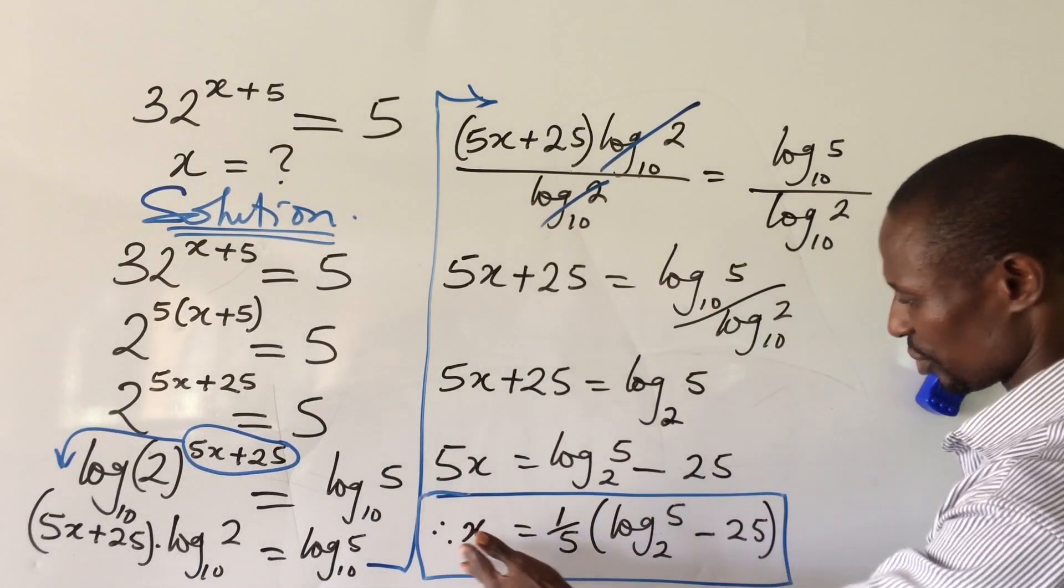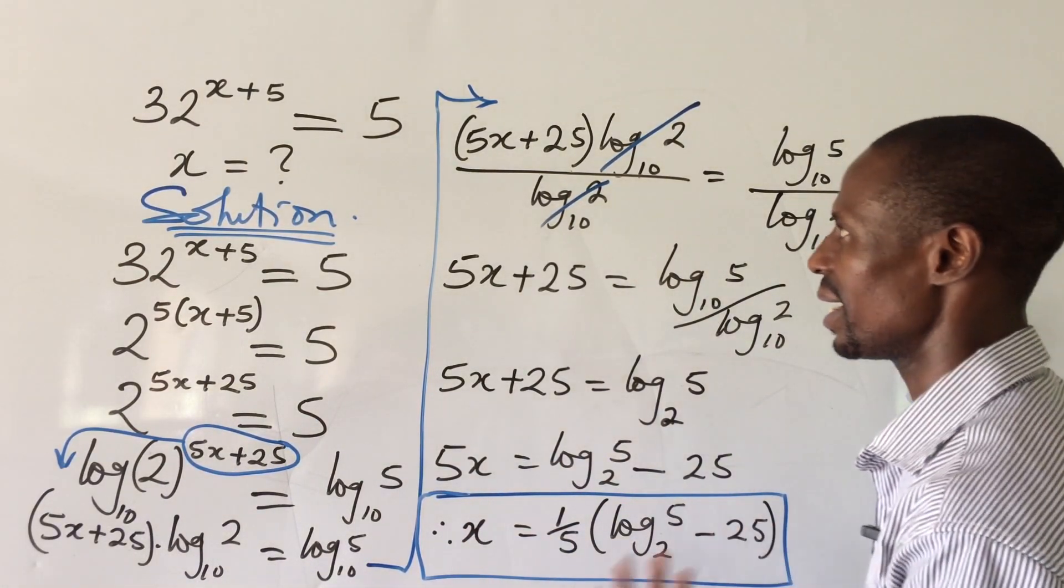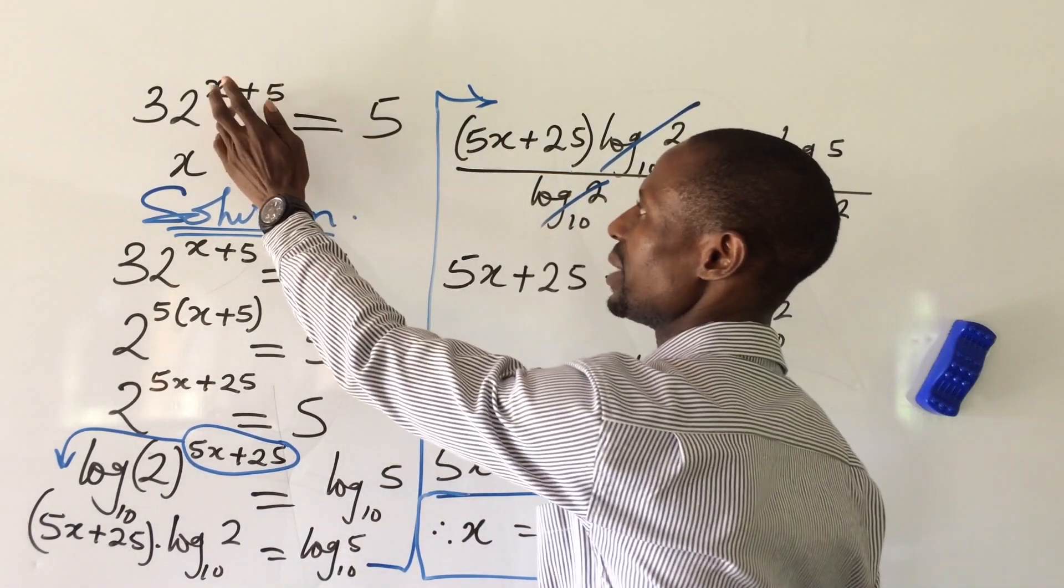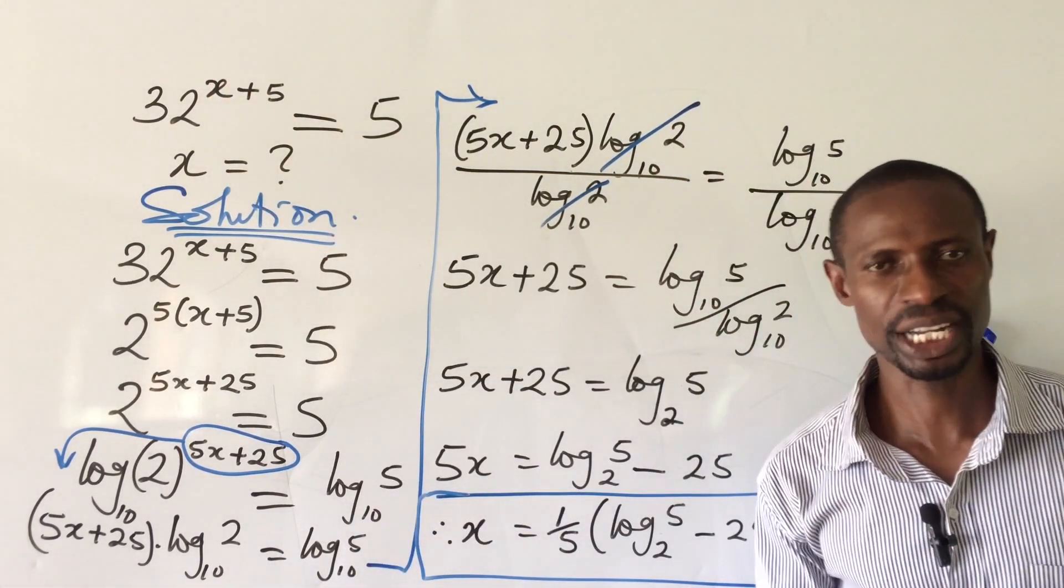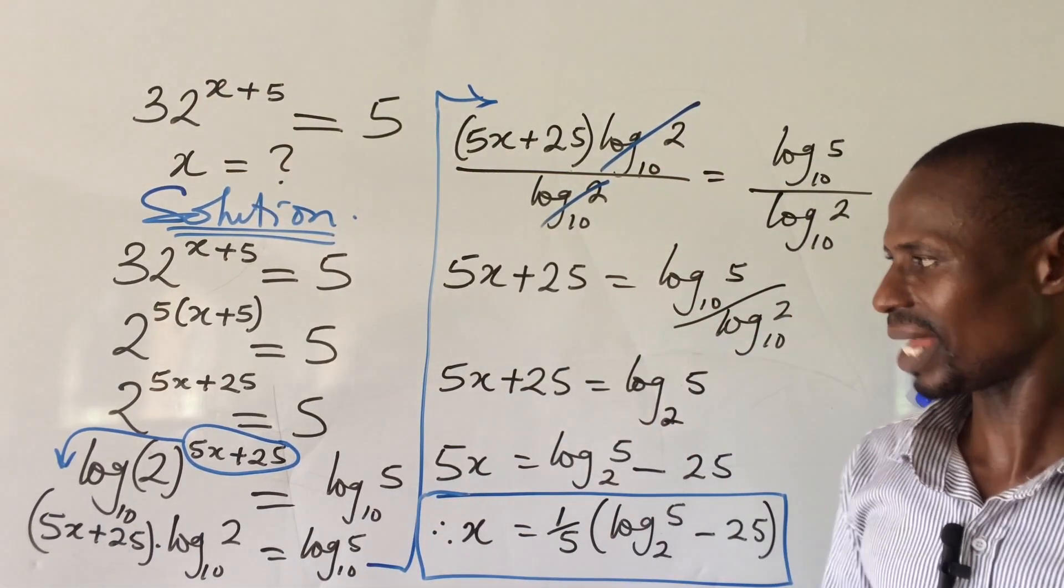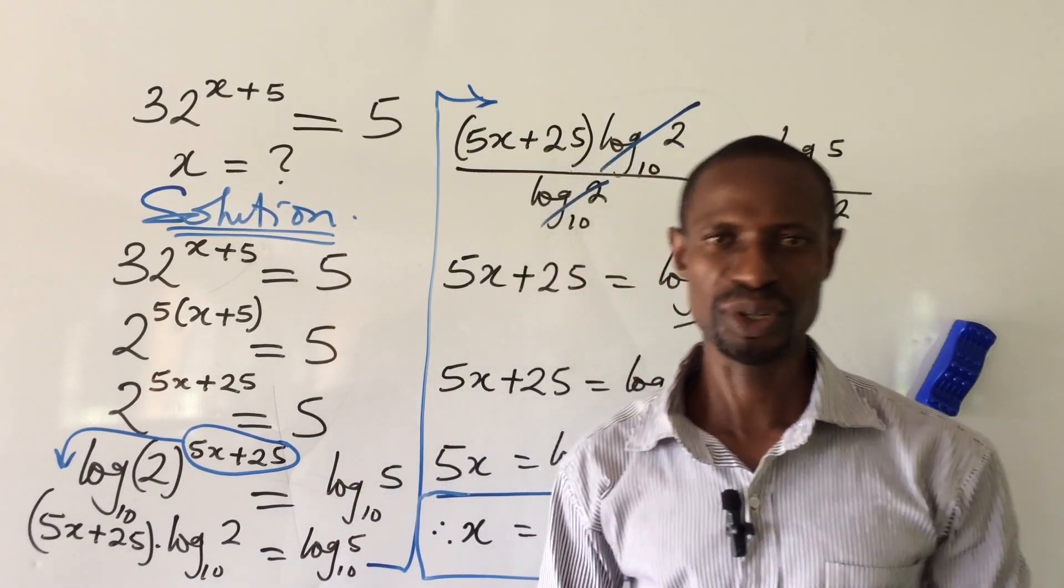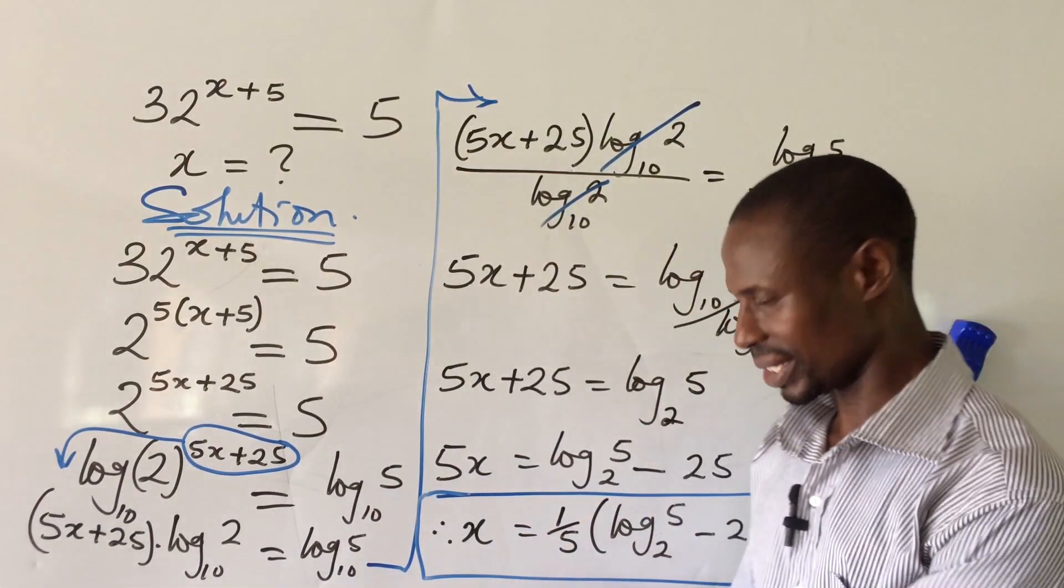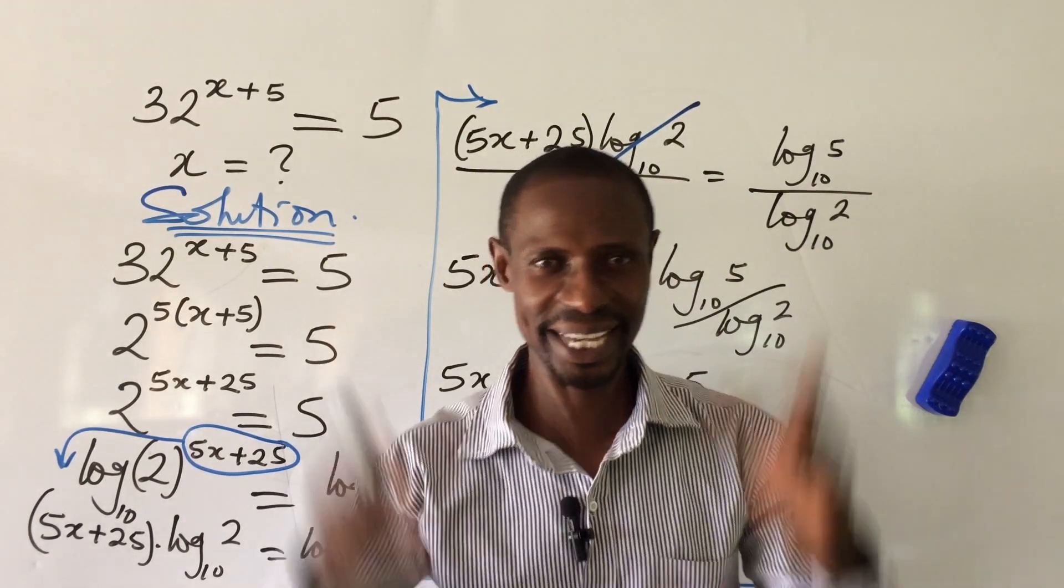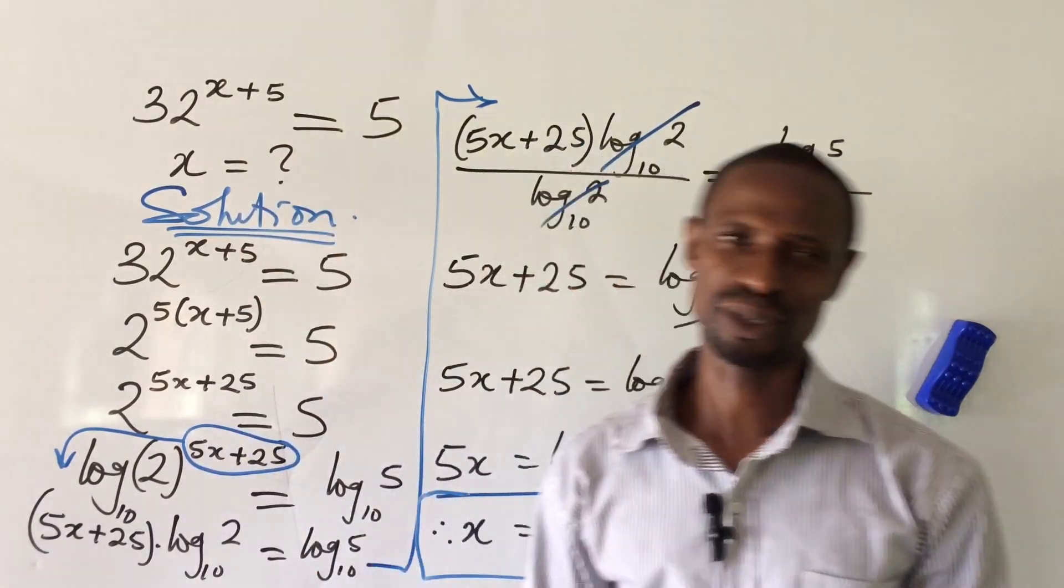This is the value for our x. Now I've used calculator to simplify this answer down. And the answer I got from here, I put it into our initial equation, our initial exponential equation, and it gave me an approximate value to our question, which shows that the solution is very correct. 100% correct. Okay.